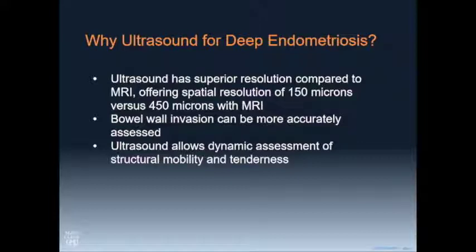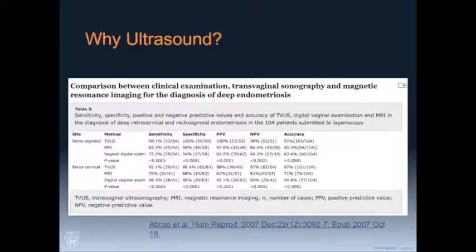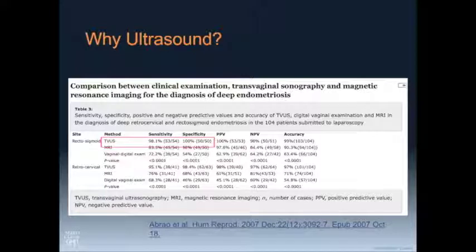Why would we use ultrasound and not MR? If you're doing a transvaginal ultrasound, you have much higher spatial resolution, particularly when it involves the bowel wall. You also have the opportunity to push on things and ask the patient where it's tender, so this is a dynamic exam, completely unlike MR. This group produced this work in 2007 — they're the ones that taught me how to do it, showing very high sensitivity and specificity for transvaginal ultrasound, much better than MR and certainly better than physical exam.